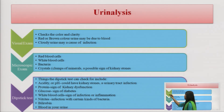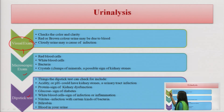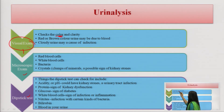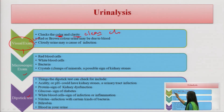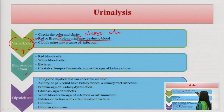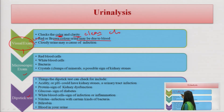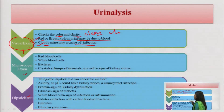Three types of urine tests are performed: visual examination, microscopic examination, and dipstick test. In visual examination, the urine is observed for color (should be yellow) and clarity (should be clear). Red or brown urine may be due to blood or certain drugs used in treatment. Cloudy turbidity indicates infection.